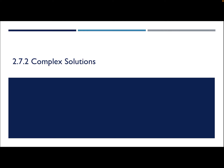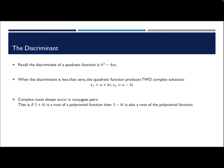Hi students. In this video we're going to be covering the second part of 2.7, which is just dealing with complex solutions. So remember the discriminant of a quadratic function is that b squared minus 4ac value. Let's make up an example. So if we have f of x equals x squared plus 4x plus 10, we know a is 1, b is 4, and c equals positive 10. So b squared minus 4ac is going to equal 16 minus 4 times 1 times 10, so that's 16 minus 40, which is negative 24.